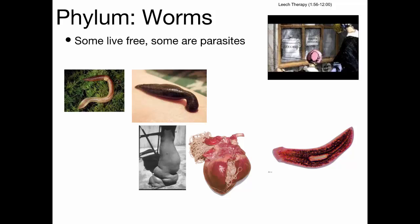There are also parasitic worms that affect humans. Elephantiasis is caused by a type of worm that enters the body through water and lives in the lymphatic system. The lymphatic system redistributes fluid around the body; when the worm clogs it up, fluid accumulates in the lower extremities — the person's feet, calves, and legs swell dramatically.